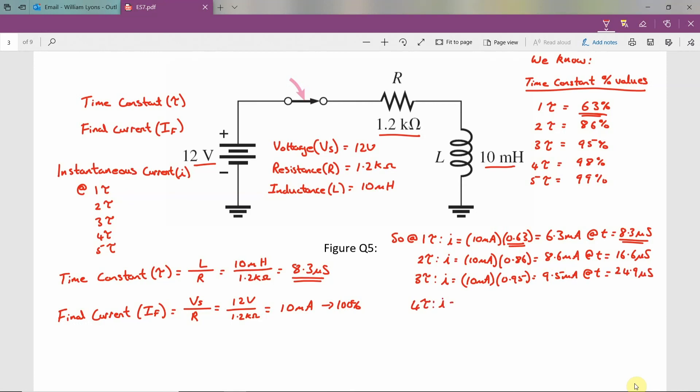At 4τ, I is equal to 10 milliamps multiplied by 0.98, which results in a value of 9.8 milliamps at a time of 33.2 microseconds. At 5τ,